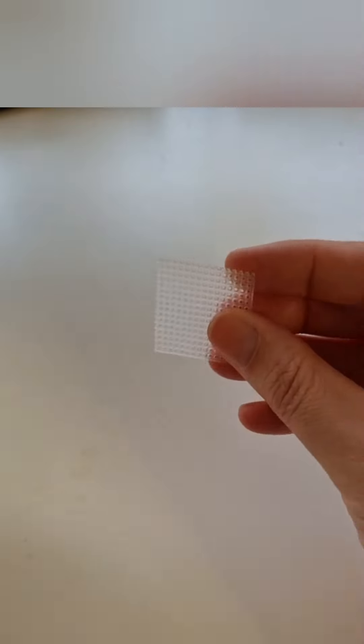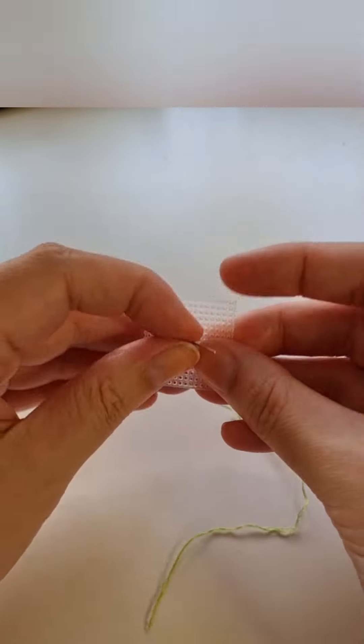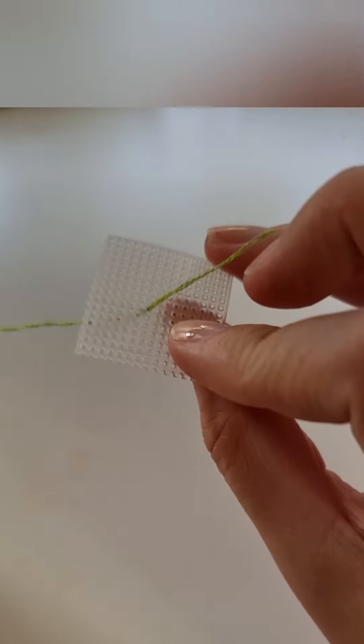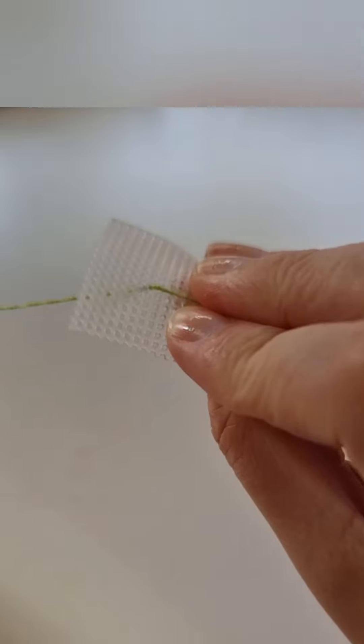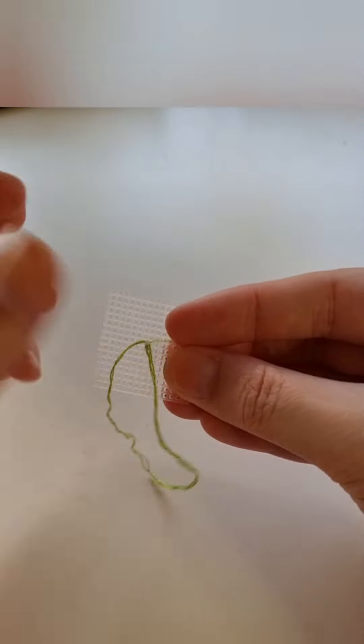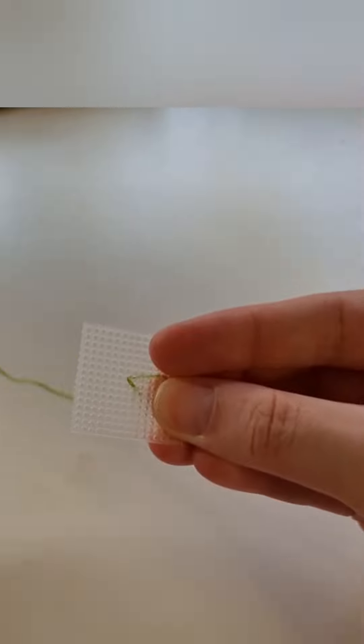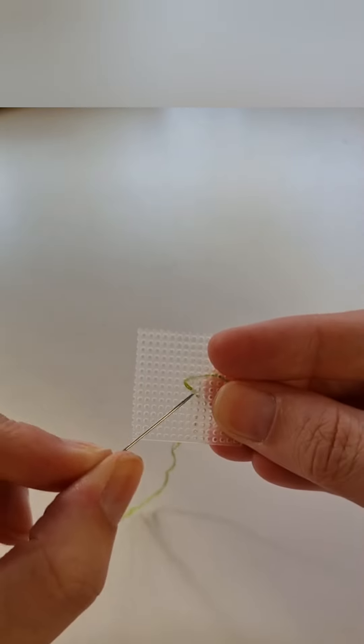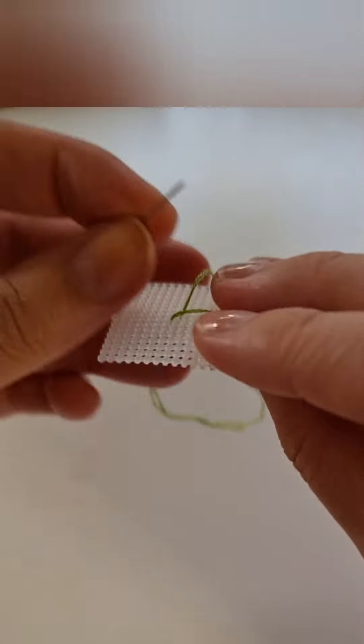Pull your needle through leaving about one inch of thread at the back of your plastic. This is called the tail of your thread. Because we haven't tied a knot we'll be catching it as we start our stitches. For my first stitch I've gone diagonally and down to the right. This is half of my cross.